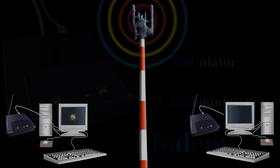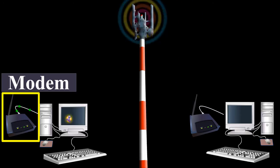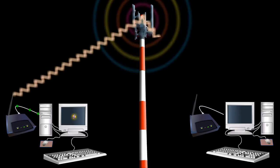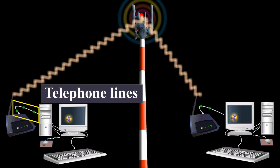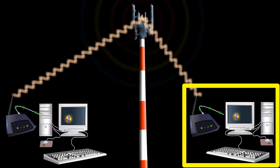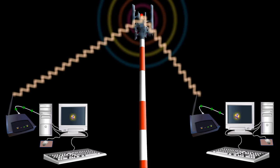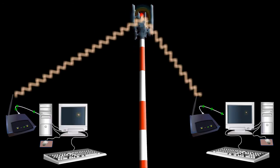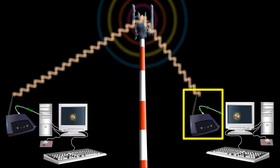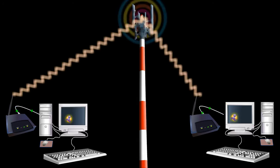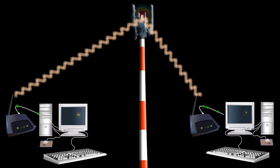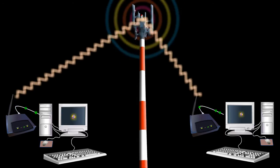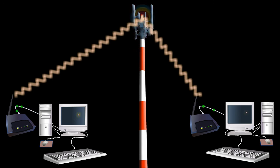A modem is used to convert digital signals into analog signals capable of being transmitted over telephone lines. At the receiving end of the system, a modem is used to demodulate the analog signals and reconstruct the equivalent digital output. Modems are placed at both ends of the communication circuit as shown in the visual.